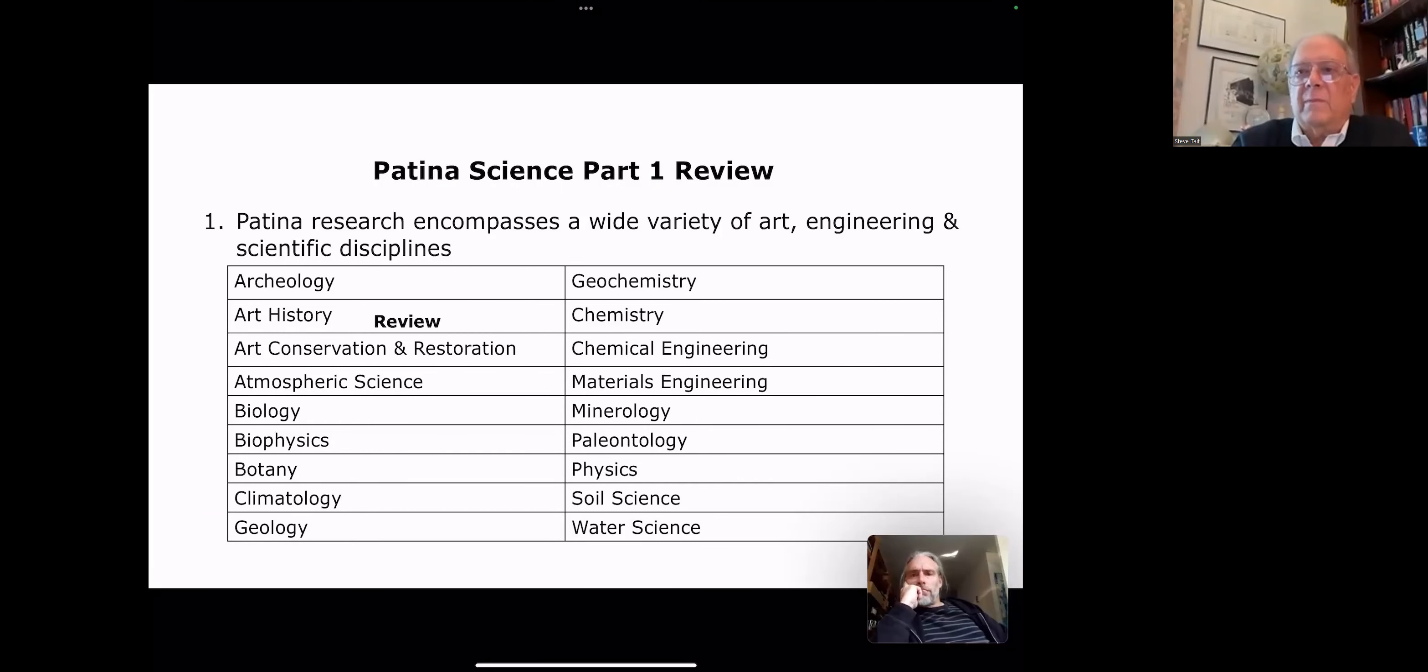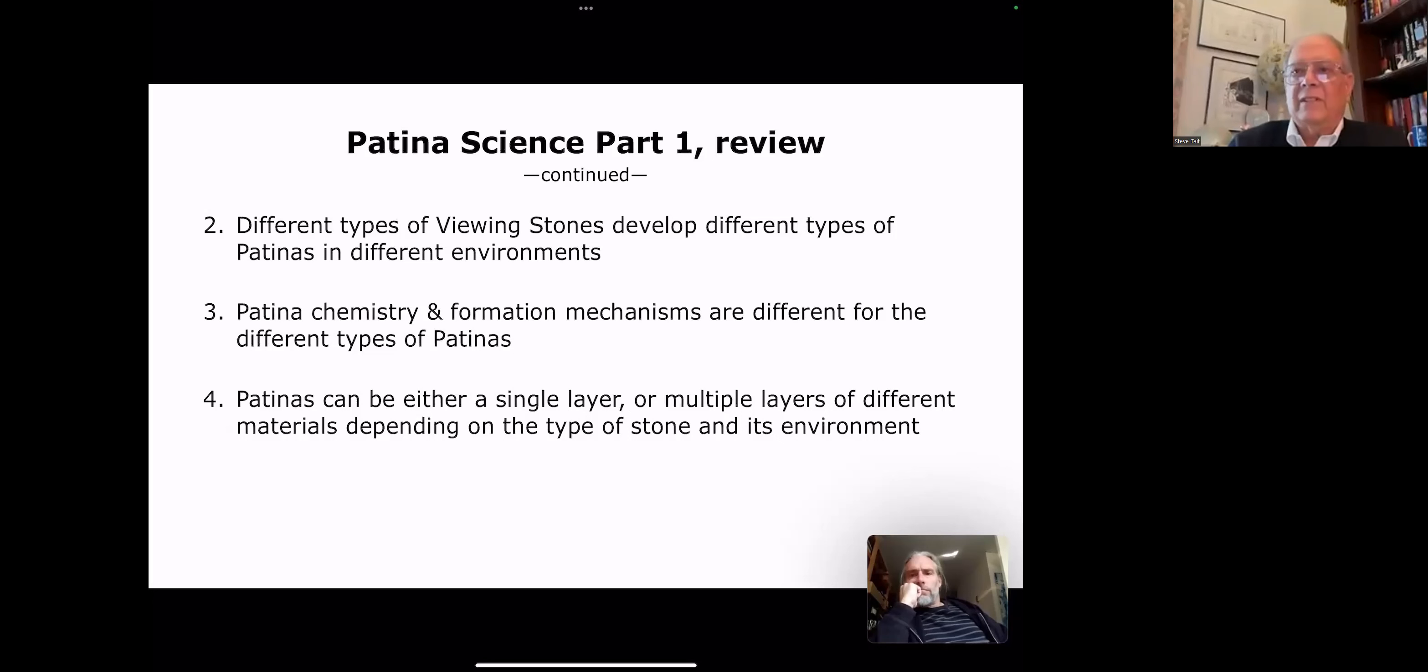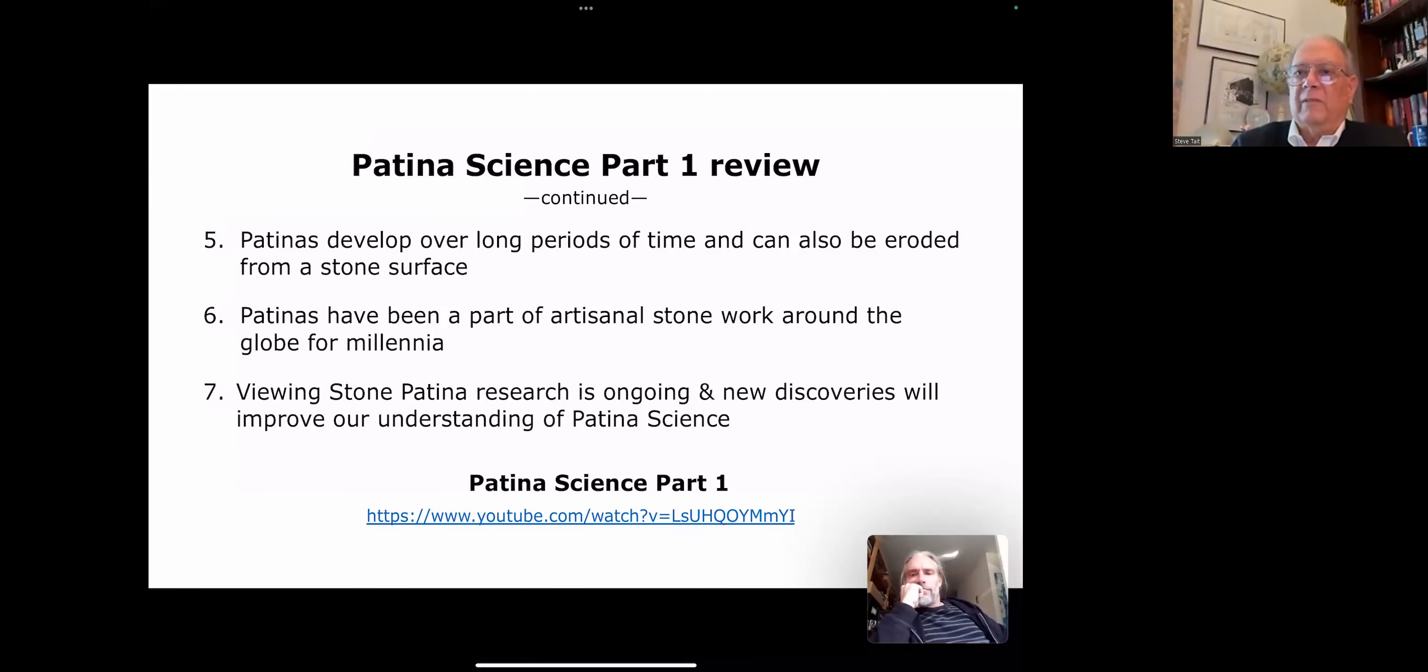As part of patina science part one, we pointed out that the research that's going on on patinas really encompasses a wide variety of art, engineering, and scientific disciplines. It's almost A to Z, archaeology to water science. Different types of viewing stones develop different types of patinas in different environments. Basically the kind of patina you get depends on the stone and the environment. Patina chemistry and how patinas are formed are different for different types of patinas. Patinas can be a single layer or multiple layers of different materials. Again, it depends on the type of stone and its environment.